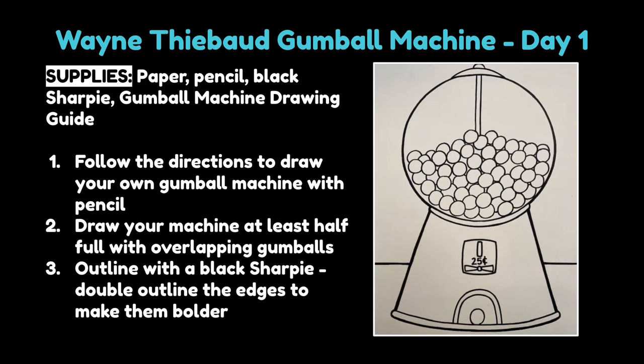Then, draw your machine at least half full with overlapping gumballs. Notice how in my picture, the gumballs are not all complete circles. That's because some of the gumballs are behind the ones in the front, so we're going to work on overlapping today in our drawing. Then, after you finish, you can outline your drawing with a black sharpie. Double outline the edges to make them look even bolder and stand out more. Okay artists, let's go ahead and watch our directions.